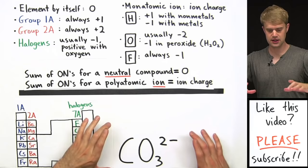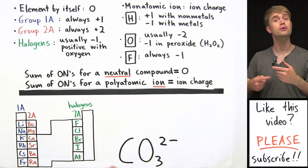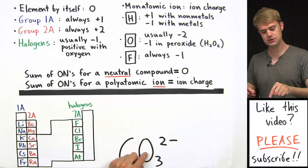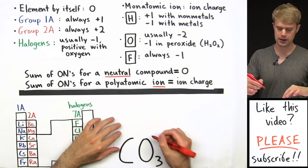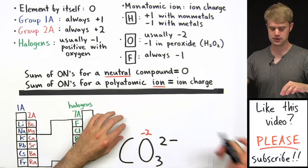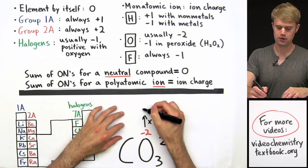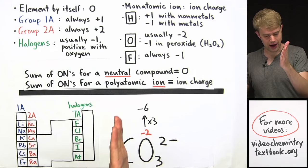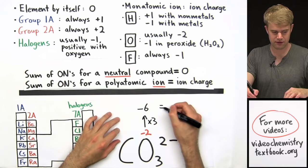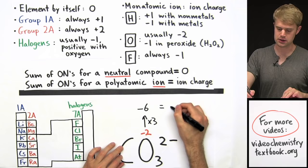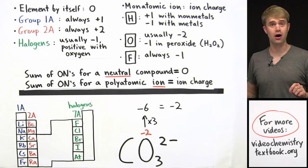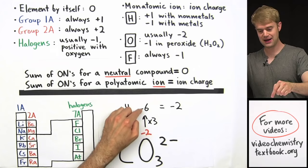CO3 2-minus is a polyatomic ion with a charge of 2 minus, and we must take this into account in our calculations. There's no rule for carbon, but oxygen is usually minus 2 except in peroxides. With 3 oxygens, we get minus 2 times 3 equals minus 6. The oxidation number on carbon plus the total for oxygen must equal minus 2, which is the ion charge. So carbon's oxidation number is plus 4, since plus 4 minus 6 equals minus 2.